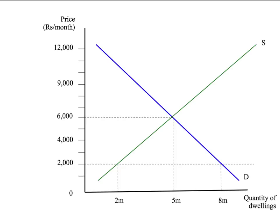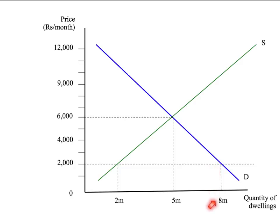But what happens when the government introduces its price ceiling — its rent control laws? Let's say the government sets the maximum rent at 2,000 rupees per month. At this lower price, landlords are only going to want to rent out a smaller number of properties — 2 million properties — although tenants, the buyers, would like to rent far more, say 8 million properties. This difference — the 8 million properties buyers want versus the 2 million landlords will supply — is our level of excess demand: 6 million dwellings.